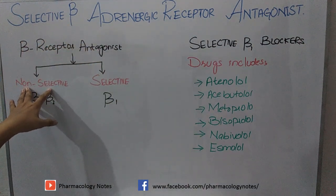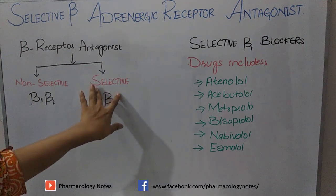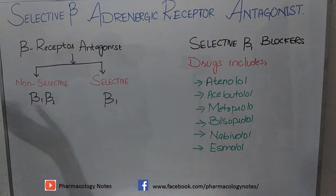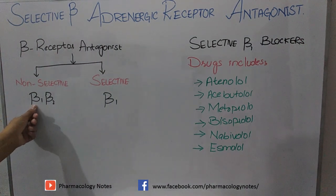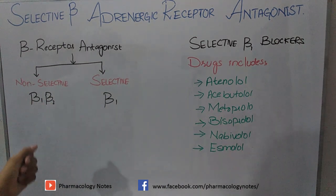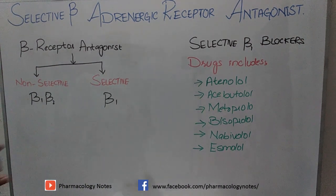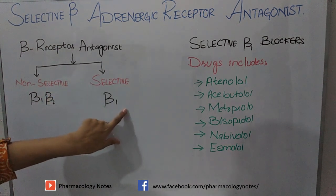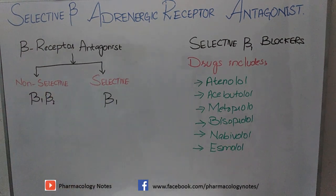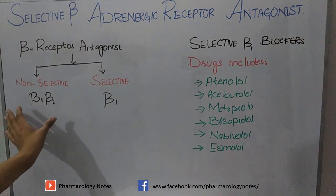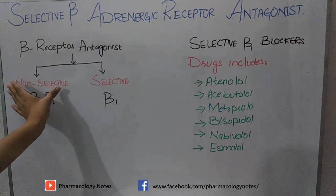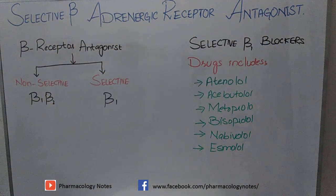The two types are non-selective beta-blockers and selective beta-blockers. Non-selective beta-blockers are those drugs which have affinity for both beta-1 and beta-2 receptors, while selective beta-blockers have affinity only for beta-1 receptors. Non-selective beta-adrenergic receptor antagonists were covered in the last lecture.